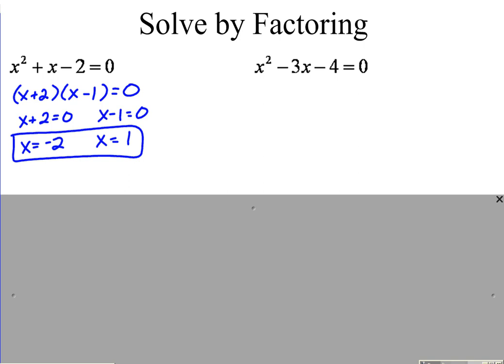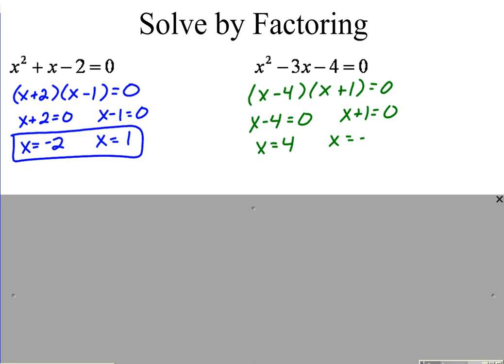Second problem: factor. Numbers that multiply to be negative four and add up to be negative three are negative four and positive one. Once it's factored, set each factor equal to zero and continue solving. Those are the two solutions to that quadratic.